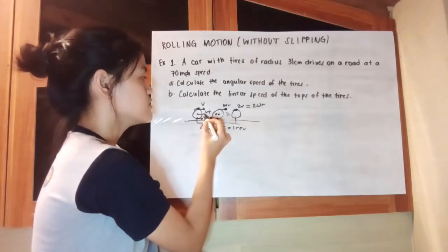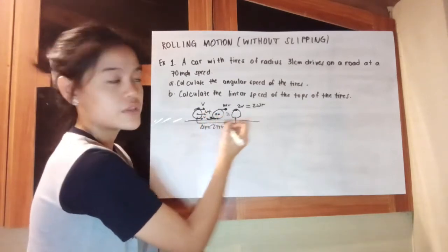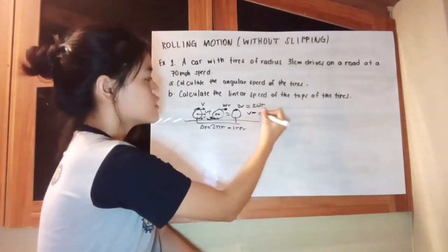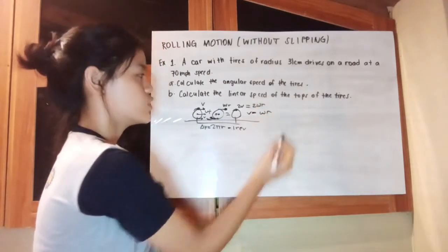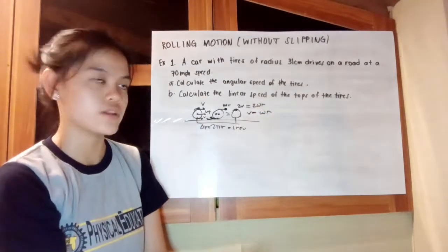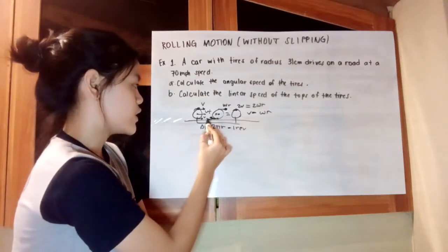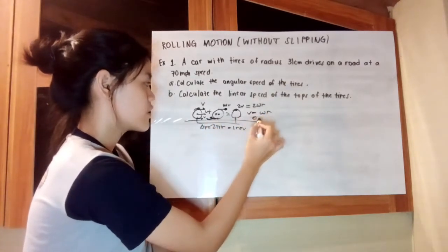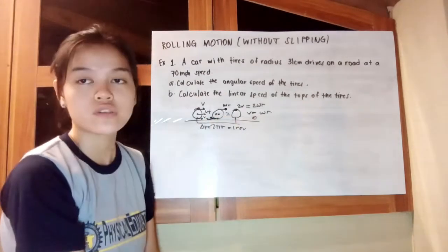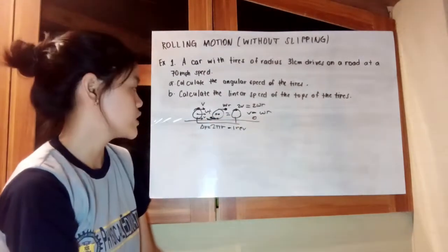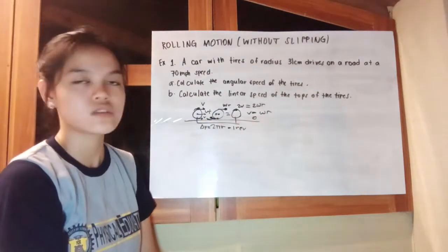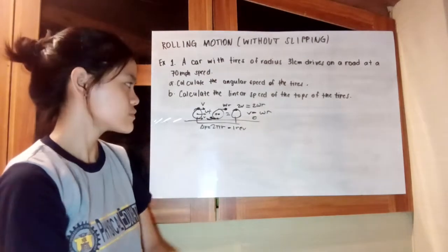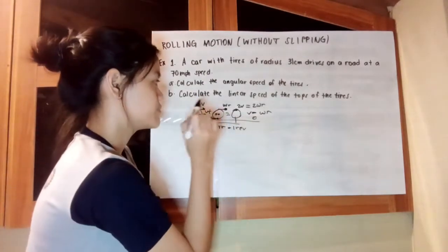In this one, we only have the velocity, which is also equivalent to ωr because they are equal. For the third one, we have 0 because velocity minus ωr or the angular velocity radius is equivalent to 0. Now, let's move forward to our sample problem.